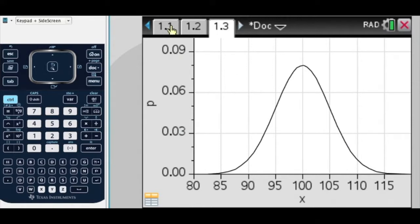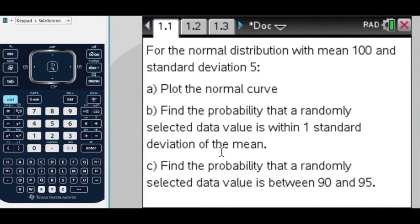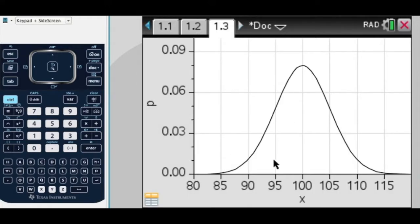So, now, I want to find the probability that a randomly selected value is within one standard deviation of the mean. In other words, between 95 and 105.